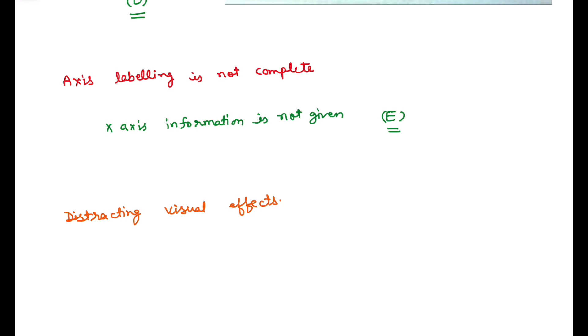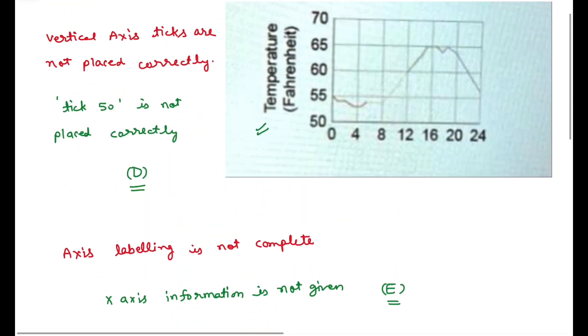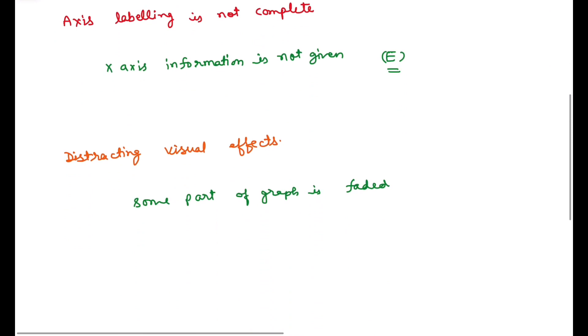We see that some part of the graph is shaded, or we can say this is very light in color compared to the other part. We can see this in this part also, hence part F is also correct.